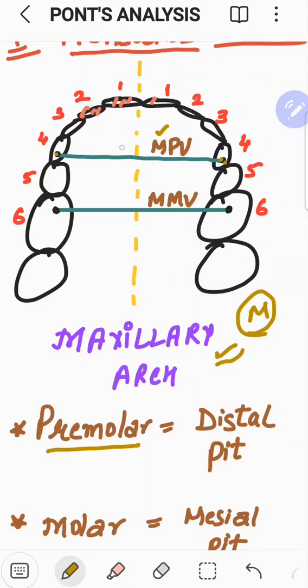And another calculation which is taken is for the molars. One is for the premolars, another is for the molars. In molars, for the first molar, the values are taken from the mesial pit. From the mesial pit of one upper maxillary first molar to the mesial pit of upper first permanent molar is calculated. This is called as MMV, which is measured molar value.